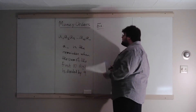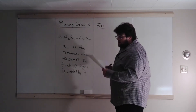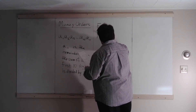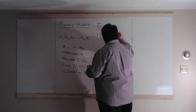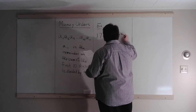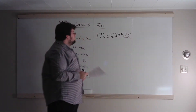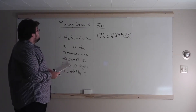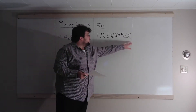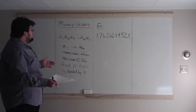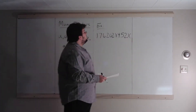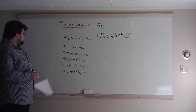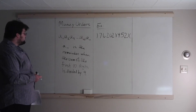The example is going to be: find the check digit — in this case, find A11. The number is 1762028952X. So this 11-digit code stands for a money order number; find X. We can find X by using this rule: the remainder when the sum of the first 10 is divided by 9.